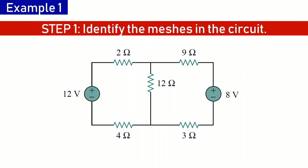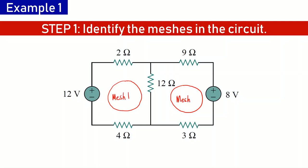Step 1 is to identify the meshes in the circuit. Here we can see that this circuit has two meshes, which I am marking with these two circles. This is mesh 1 and this is mesh 2.